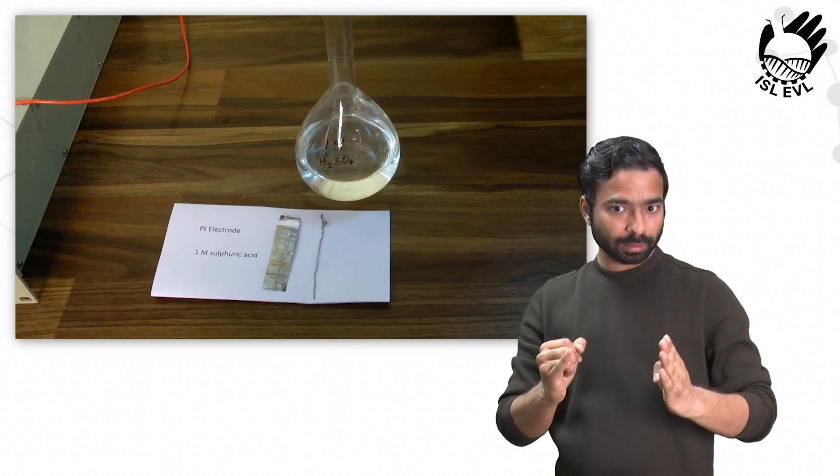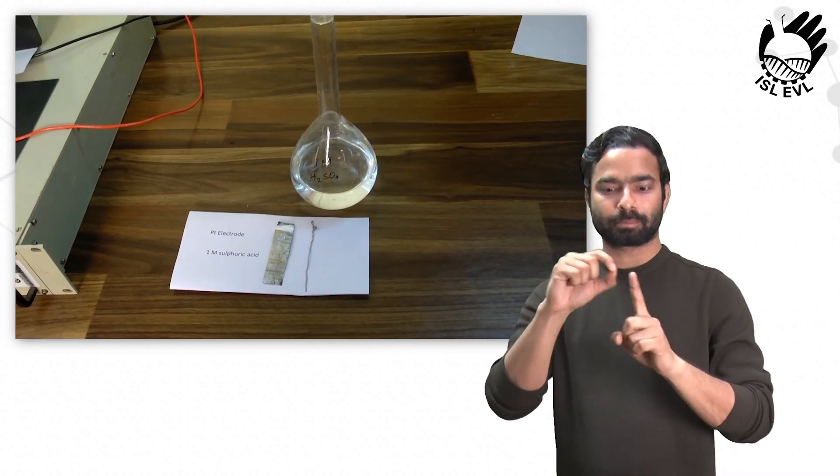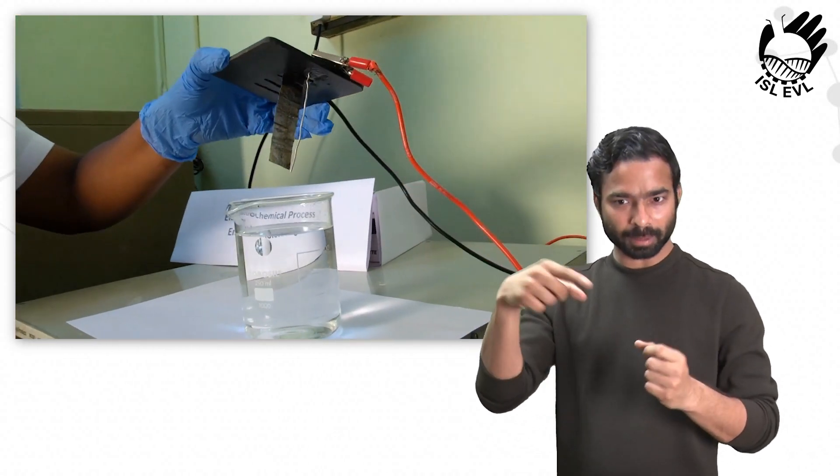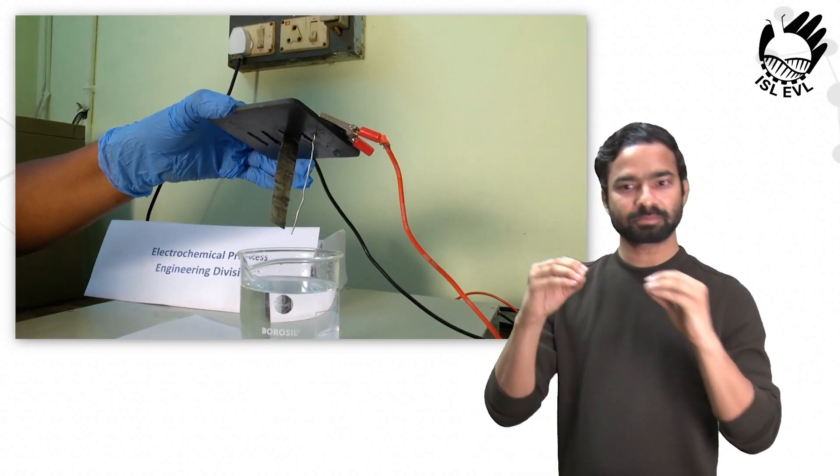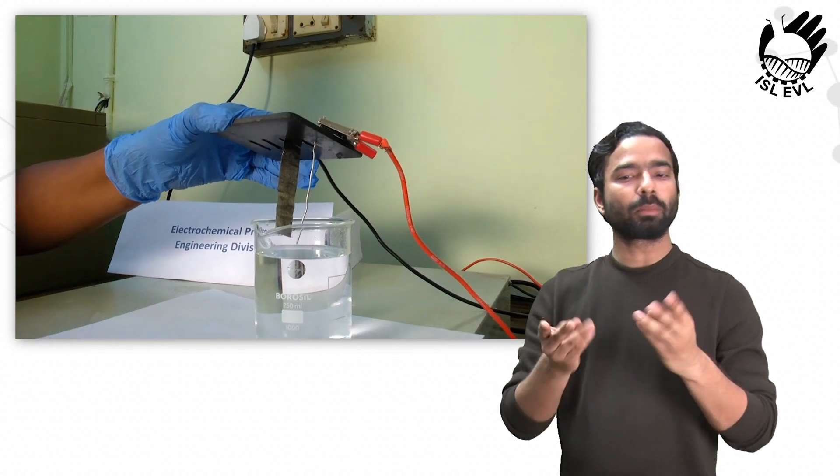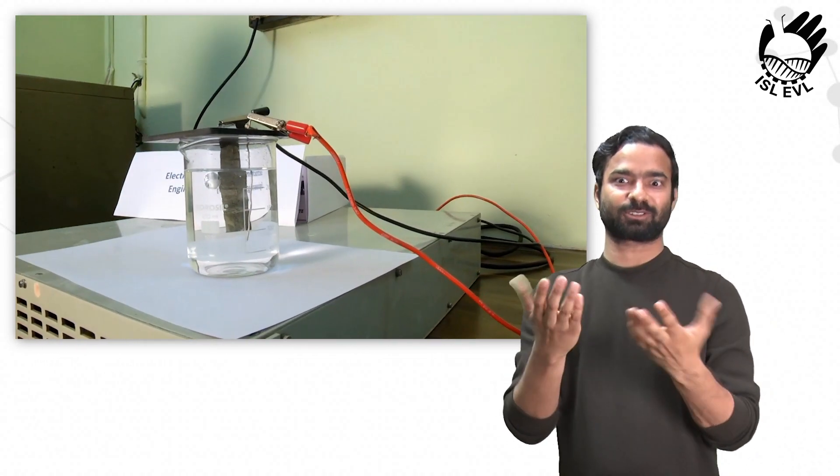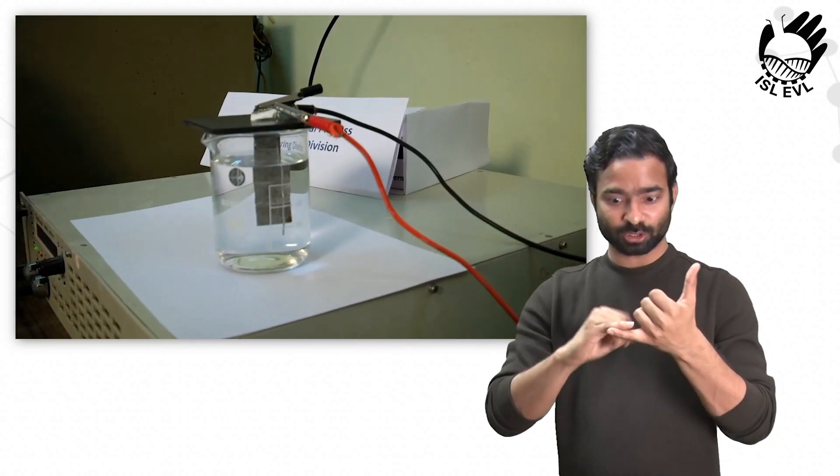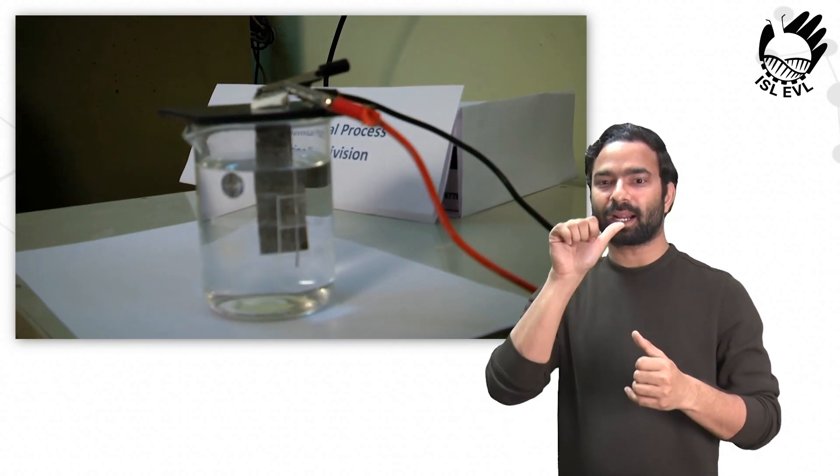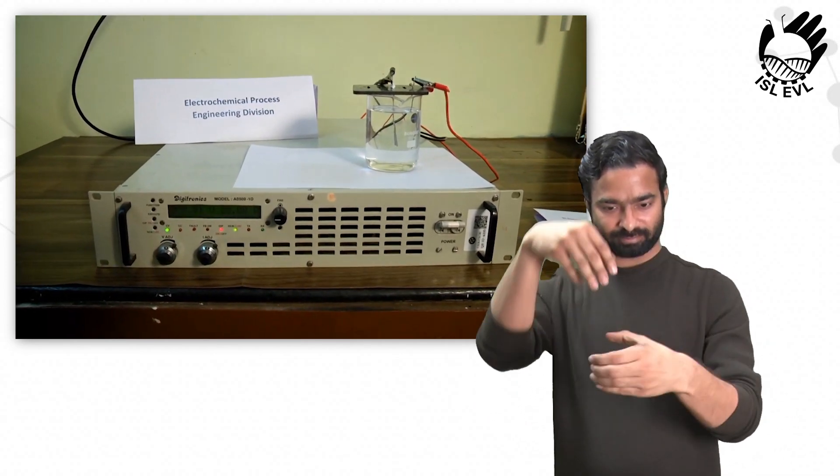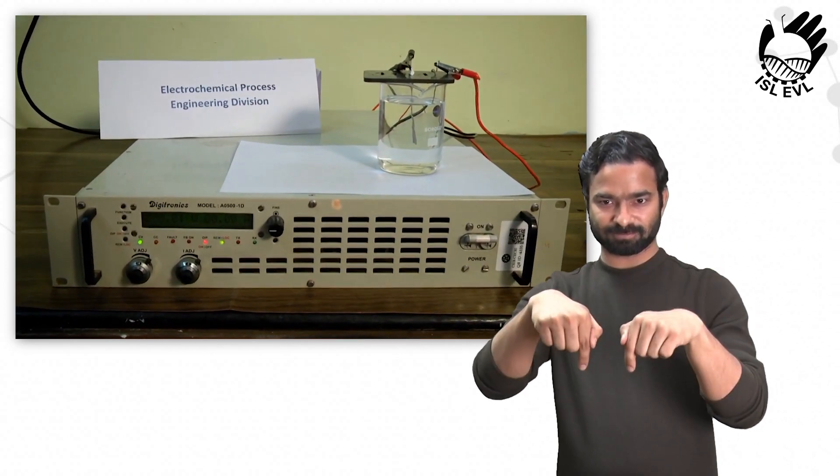The platinum metal is chosen due to its excellent electrocatalytic activity as well as its stability in both acidic and alkaline conditions. The electrodes are kept 2 cm apart from each other and immersed in the electrolyte. The sulfuric acid serves as an electrolyte due to its high ionic conductivity and thermal stability. The electrodes are externally connected to the DC power supply.